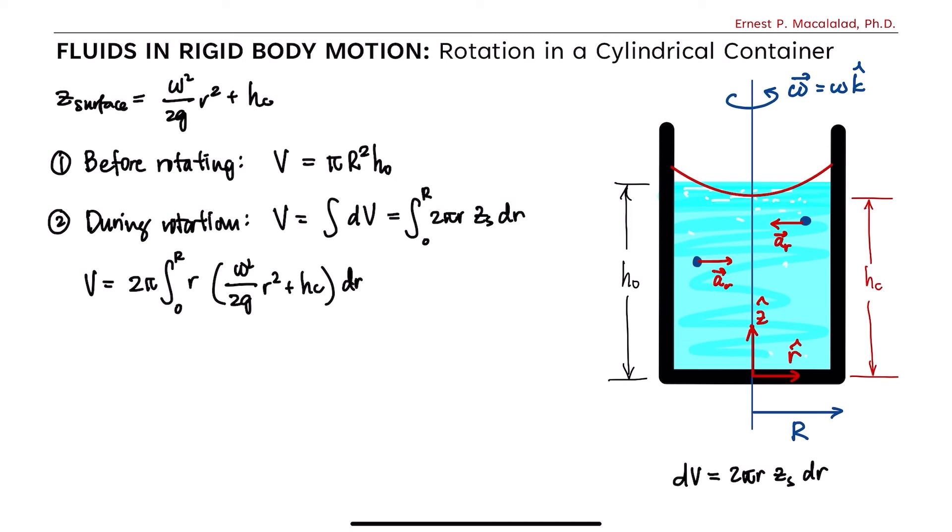Doing the integration, this becomes v equals pi r squared times omega squared r to the fourth over 4g plus hc. So equating these two expressions, we now have omega squared r squared over 4g plus hc equals h0, or simply hc equals h0 minus omega squared r squared over 4g.